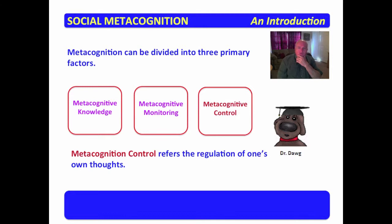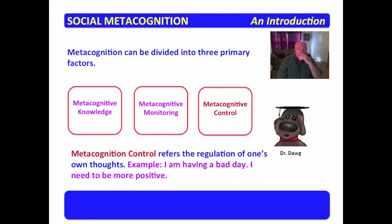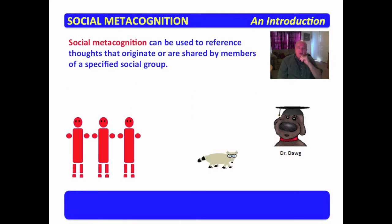Metacognitive control refers to the regulation of one's own thoughts. Example: I'm having a bad day, I need to be more positive. You ever said that to yourself? Man, I'm just having a bad day, I need to be more positive with other people. That's metacognitive control.